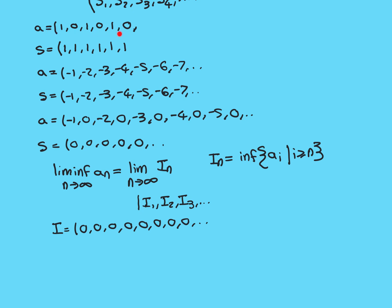Let's go back to the sequence 1, 0, 1, 0, ... and think about its limit inferior. For I1, the infimum of the set of all terms {0, 1} is 0. For I2, the set from the second term onwards is still {0, 1}, so infimum = 0. No matter how far you go, the infimum is always 0, so this I sequence is the constant sequence of all zeros, which converges to 0. Therefore the limit inferior is 0. You can see: limit superior = 1, limit inferior = 0, and those are the only two limit points — limit inferior corresponds to the smallest, limit superior to the biggest.